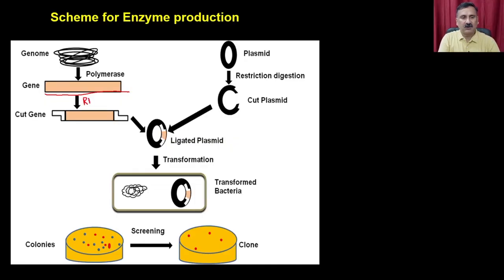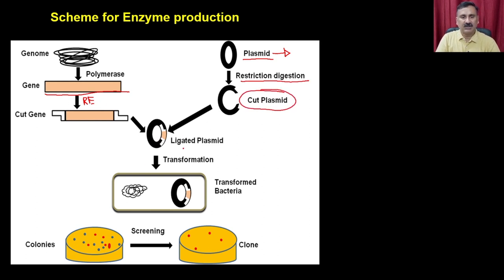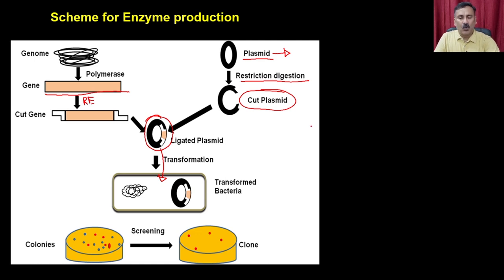Once you have the genomic sequences, you perform restriction digestion to get sticky ends — the same for the vector. We have taken an example of a plasmid, which is a bacterial vector. After restriction digestion to get sticky ends, you perform the ligation reaction to get the recombinant clone. This recombinant clone has to be delivered into a suitable host so that it can be used for protein production.